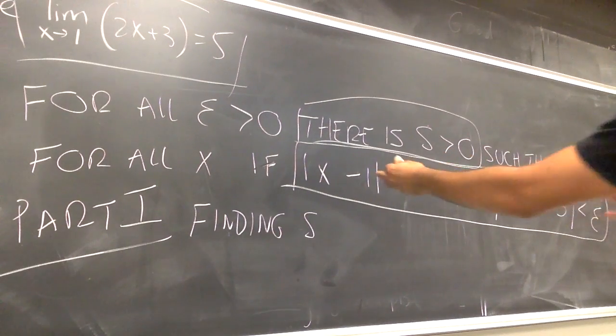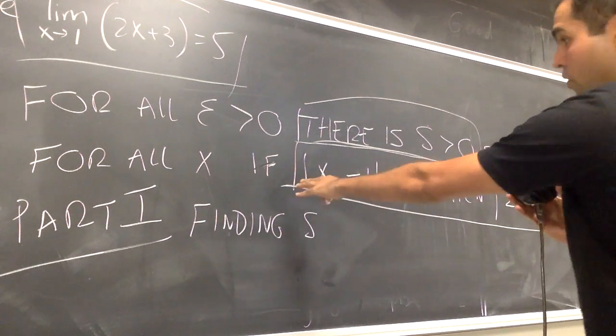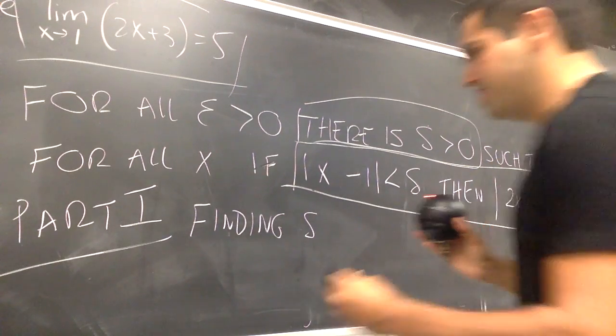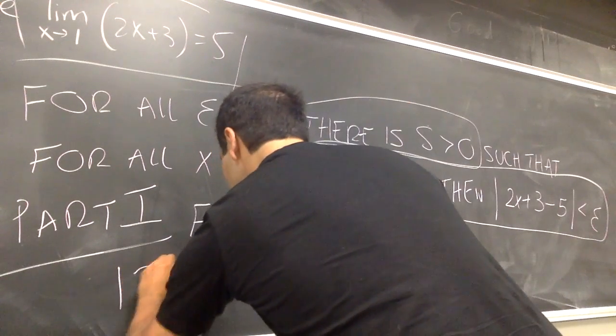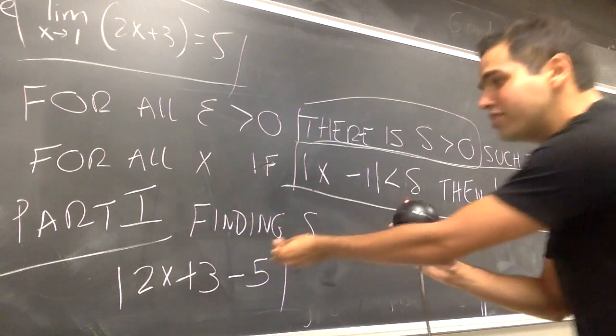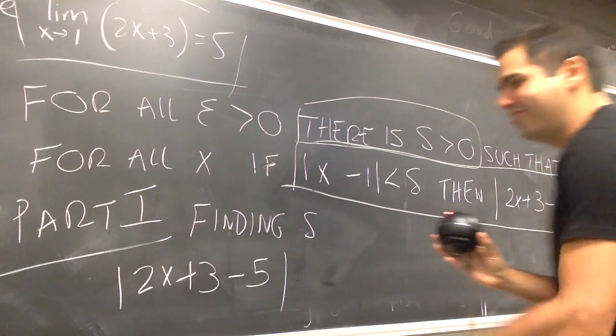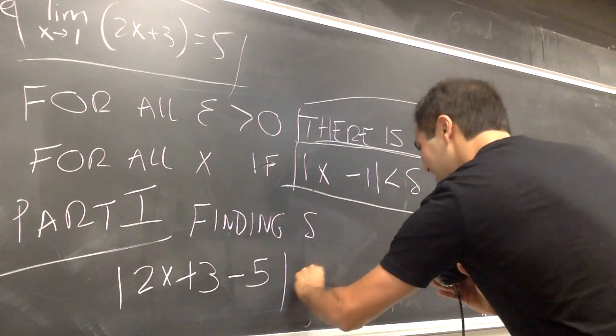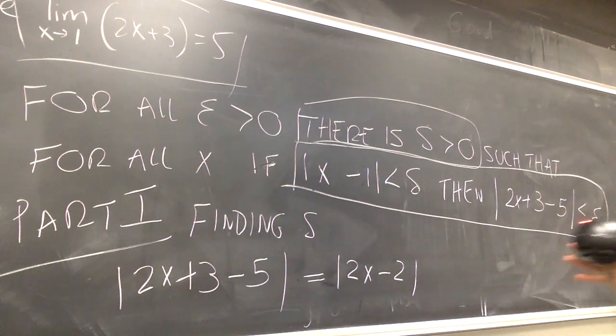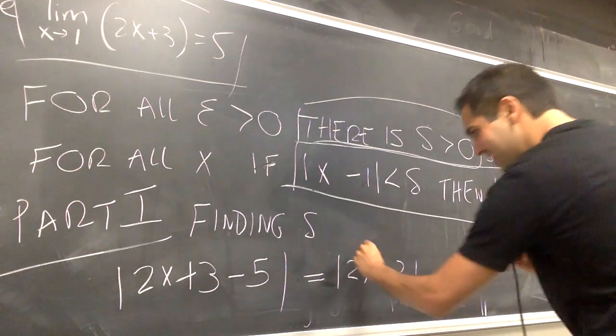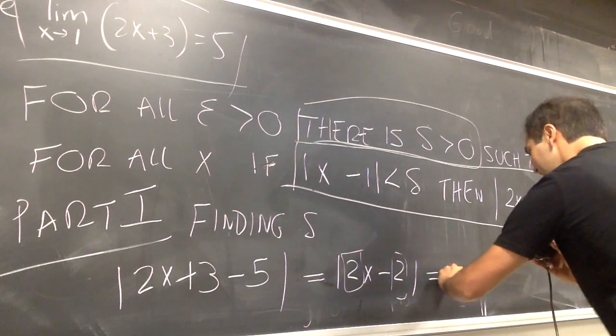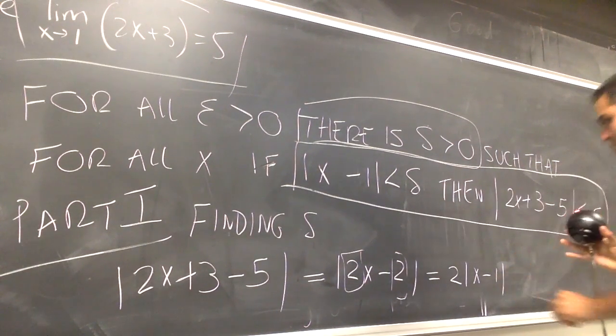And for this, let's deconstruct this. So, if x minus 1 is less than Delta, then let's see what happens here. Then, 2x plus 3 minus 5. Look, there's just some algebra that's screaming out of here. So, 2x plus 3 minus 5, it actually is 2x minus 2. And another thing that screams out here is this 2 that needs to be factored out. So, it's 2 times x minus 1.